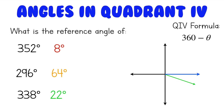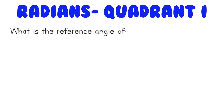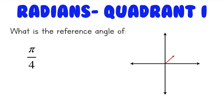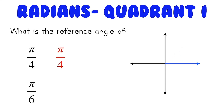What if your angle is given in radians instead of degrees? Let's start with angles in radians in the first quadrant. What is the reference angle of pi over 4? Since this is in the first quadrant, it makes an angle with the positive x-axis, and the reference angle is just pi over 4. What about pi over 6? The reference angle is just pi over 6. With radians, the reference angle of an angle in the first quadrant is just itself.